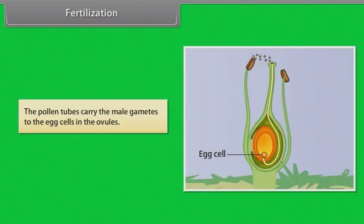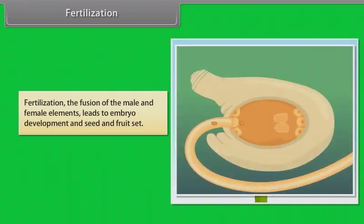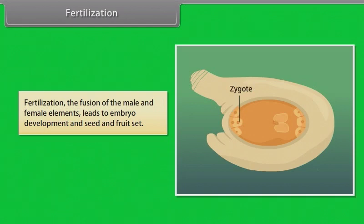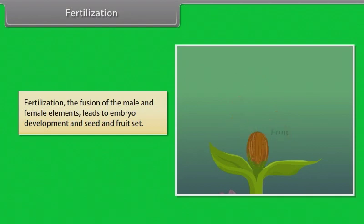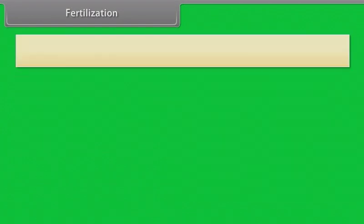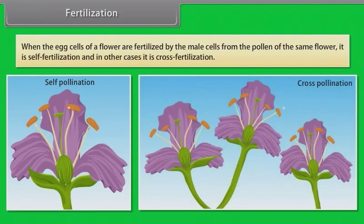The pollen tubes carry the male gametes to the egg cells in the ovules. The fusion of the male and female elements leads to embryo development and seed and fruit set. When the egg cells of a flower are fertilized by the male cells from pollen of the same flower, it is self-fertilization, and in other cases it is cross-fertilization.